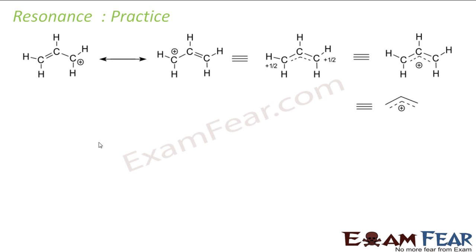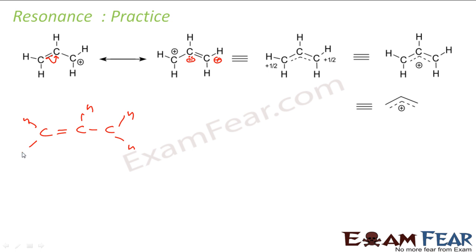Let's see more resonance examples. For the same type of structure, if you move two electrons from a pi bond to the adjacent carbon, that carbon gets two electrons and a negative charge, while the other gets a positive charge. The positive and negative merge to form a new double bond. For instance, breaking the bond between carbon 1 and carbon 2 and placing the electrons on carbon 2 gives a new double bond between carbon 2 and carbon 3.